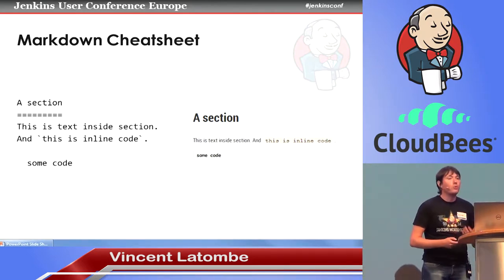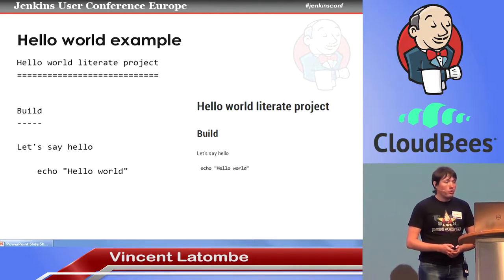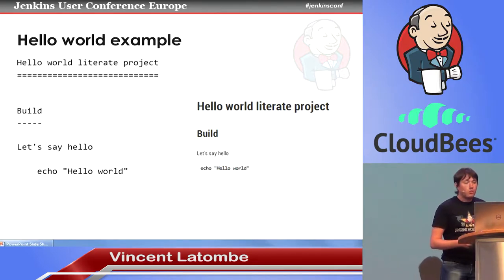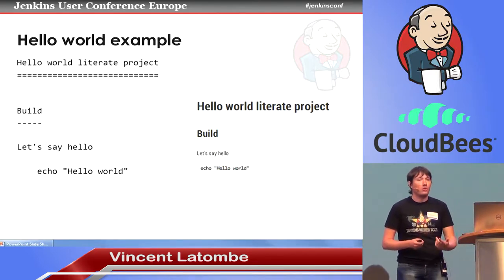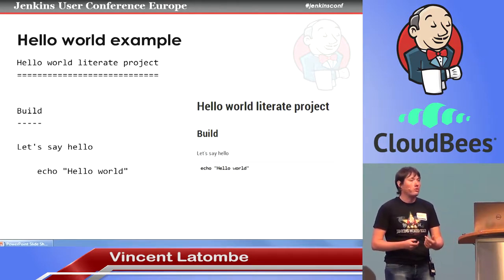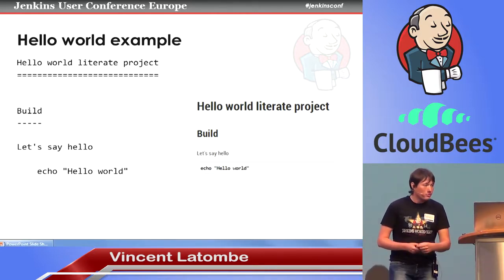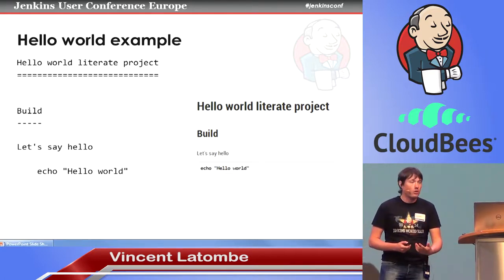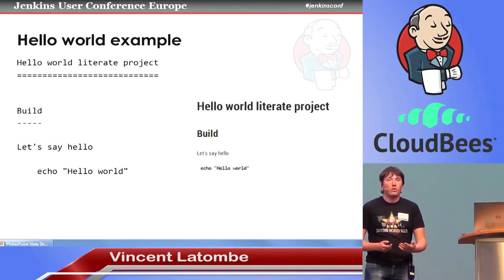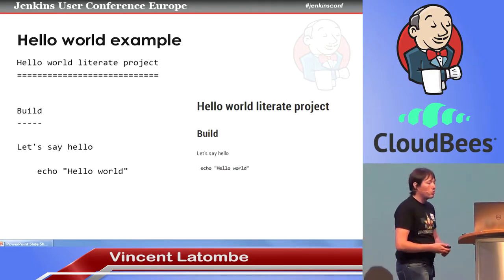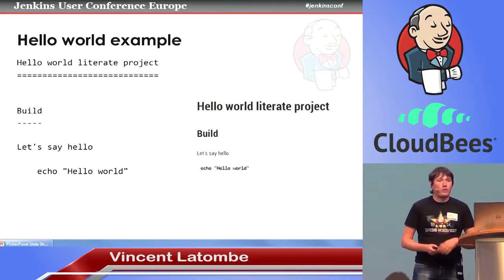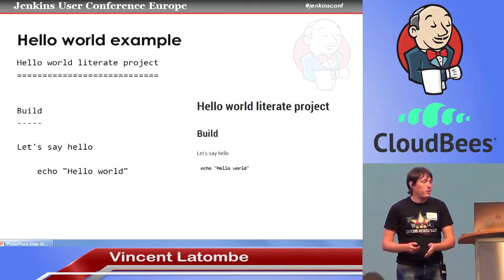Let's go over a few examples. This is a very basic Hello World literate project. The readme contains a section named 'build' — the section name is important; it's how the plugin recognizes this as a section containing build steps. Inside this section, you expect a code block with the commands to execute. Here it's just a plain echo Hello World. If you put this in a repository with the marker file alongside it, you'll simply get the Hello World executed.